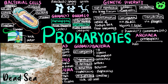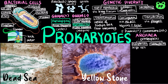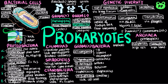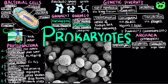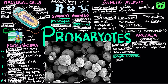Extreme halophiles — halo meaning salt and philes meaning loving — live in highly salty environments. Extreme thermophiles — thermal meaning heat and phile meaning loving — live in very hot environments. Another group of archaea known as methanogens live in swamps and marshes and produce methane as a waste product. They are obligate anaerobes, which are poisoned by oxygen and use fermentation or anaerobic respiration.